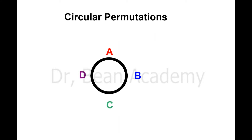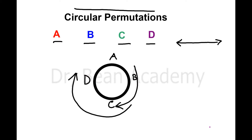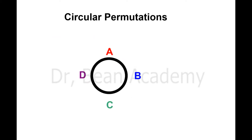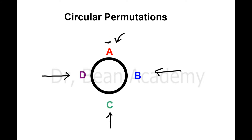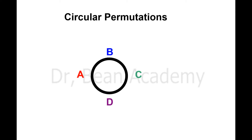Suppose from those four letters A, B, C, D I have arranged them like this: A at the top, B on the side, C at the bottom, and D on the left side. But someone else may arrange them differently — they put A on the left side, B here, C here, and D here. You might feel the difference is just the position of these letters.